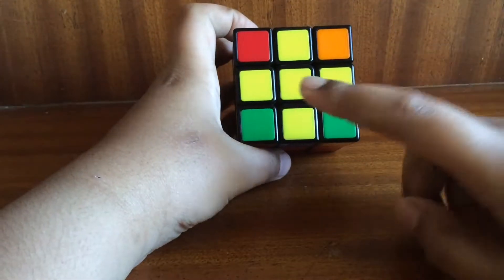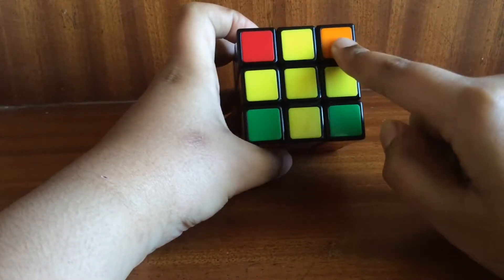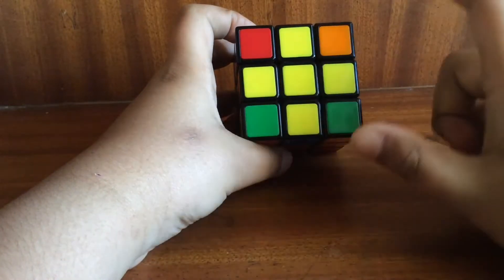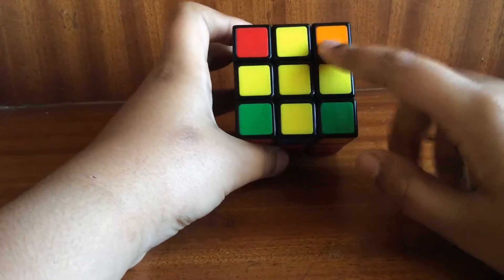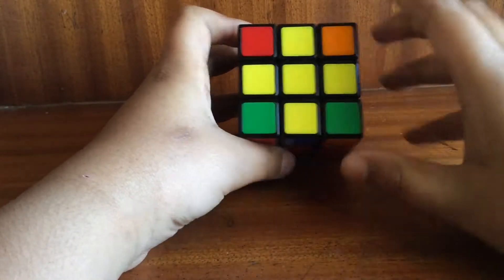You can get another situation where one of the yellow pieces is over here or over here or over here, in any of these corners but only in one corner. So it forms something like a fish shape.